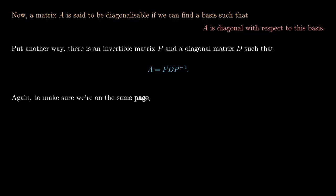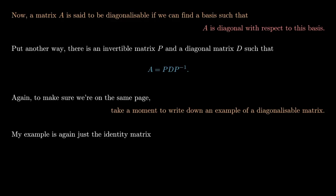Again, to make sure we're on the same page, take a moment to write down an example of a diagonalizable matrix. The example I'm going to choose is again the dumb one. I'm just going to choose the identity matrix with 1s on the diagonal and 0 elsewhere. This is certainly a diagonalizable matrix, it's diagonal.